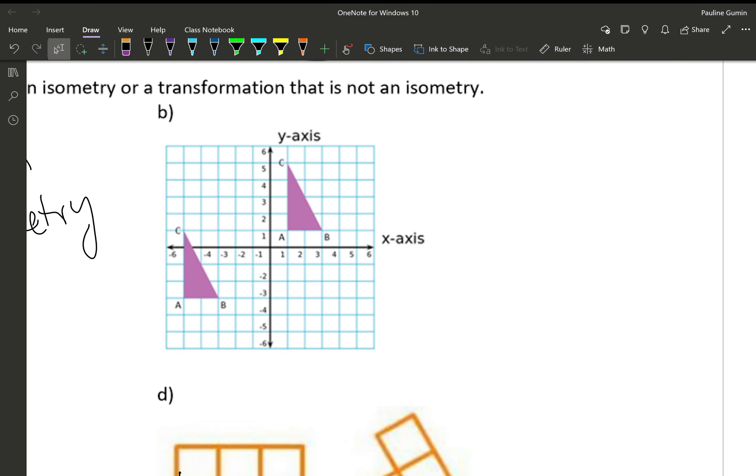Letter B. Are these images an isometry? This is four, that's two, that's four, that's two. Yes an isometry.